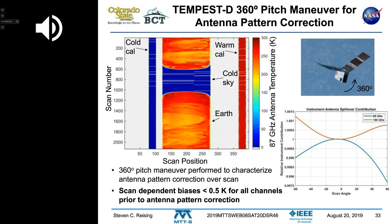We found that scan-dependent biases were less than half a Kelvin prior to antenna pattern correction. We then got data to perform antenna pattern correction, achieving about an order of magnitude improvement.